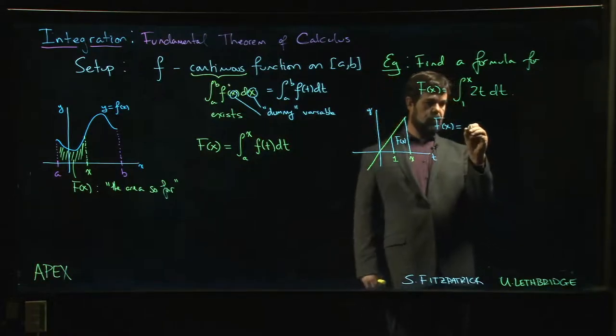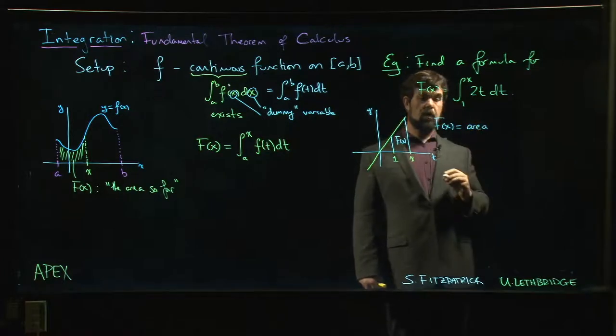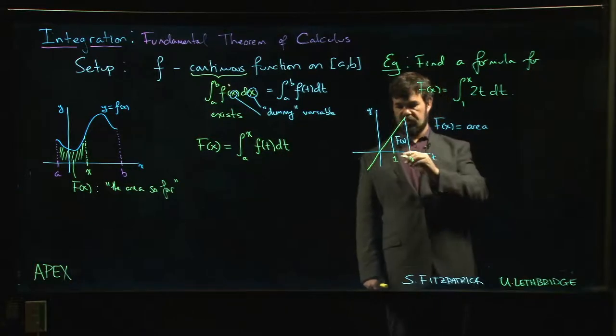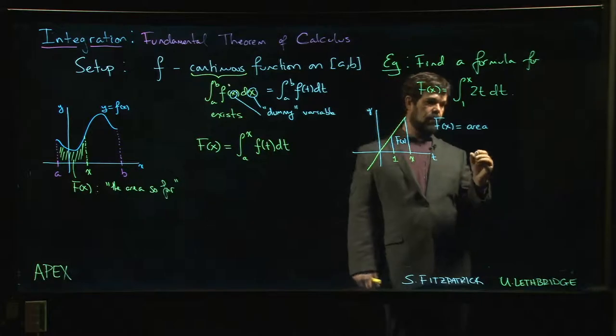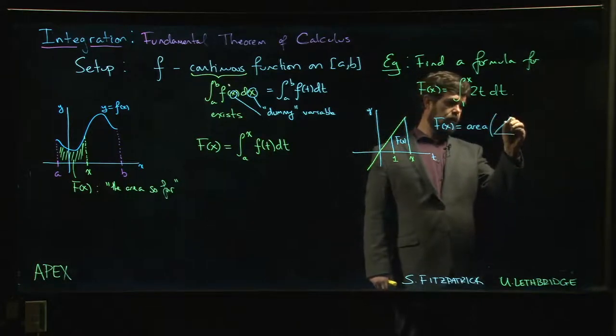The area of the trapezoid is just the difference between the area of this big triangle and the area of the little triangle.